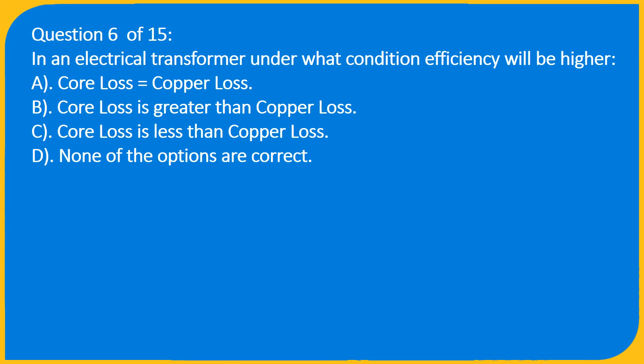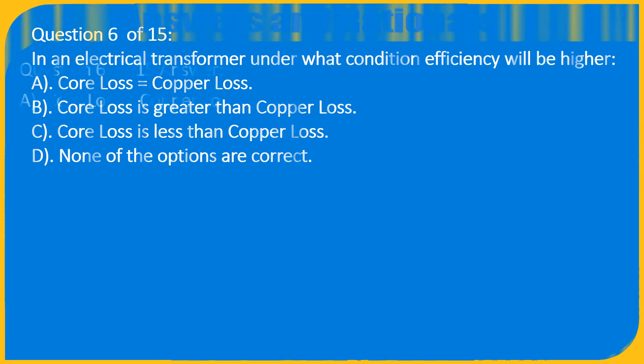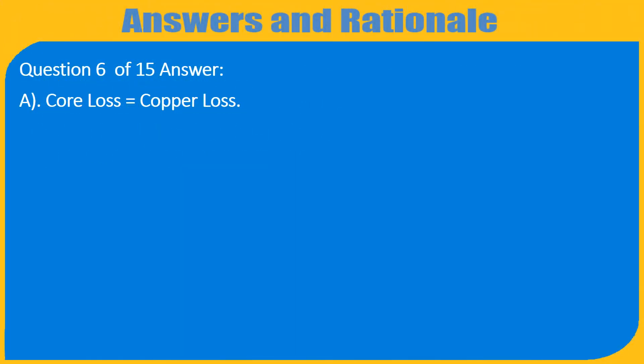Question 6 of 15: In an electrical transformer, under what condition will efficiency be highest? A. Core loss equals copper loss. B. Core loss is greater than copper loss. C. Core loss is less than copper loss. D. None of the options are correct. Answer: A. Core loss equals copper loss.